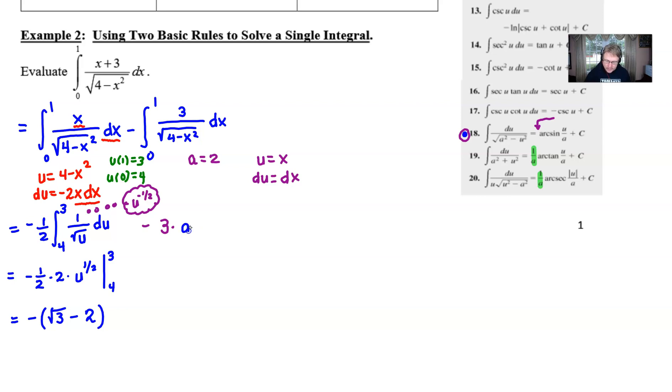So we start right away with our arc sine. I'll write that in purple and the arc sine is going to be taken of u over a or in this case x over 2 and our boundaries are going to stay the same. We never had to change them because our variable is still in terms of x.